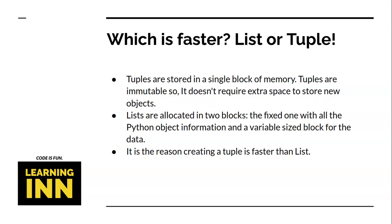A list uses two blocks: the first fixed block holds the Python object information, and the second is a variable-size block for the data. This two-block allocation is the main reason why tuples are a bit faster than lists.